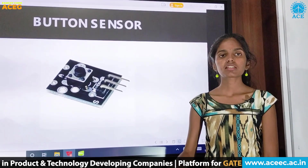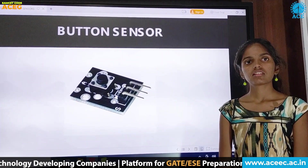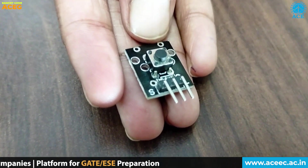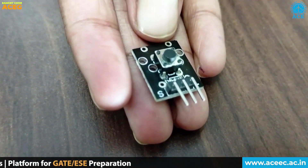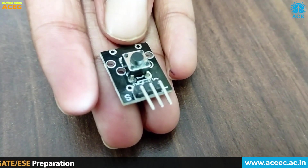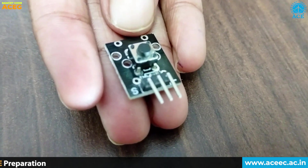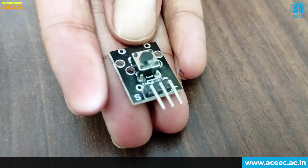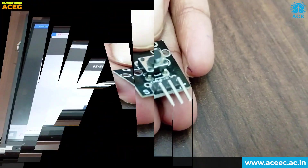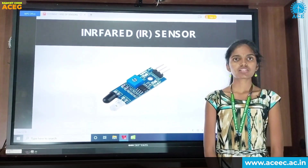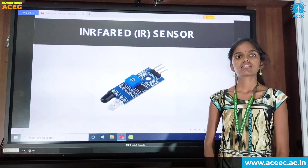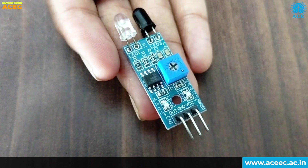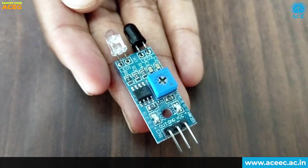This is a button sensor. It has three pins. It is a switch module — a push button that will close the circuit when pressed, sending a high signal. This is an infrared sensor, also called an IR sensor. It also has three pins.